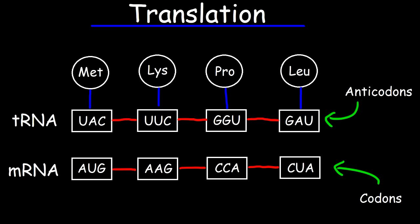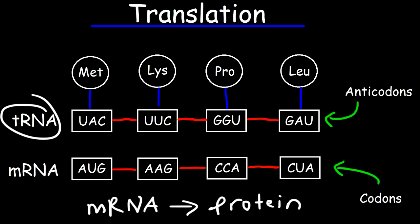Now let's talk about translation, which is the process of taking the information stored on an mRNA strand and using it to construct a protein. Once the mRNA strand is synthesized in the nucleus, it leaves the nucleus and enters the cytosol, where it interacts with a free ribosome or one that is attached to the rough ER.